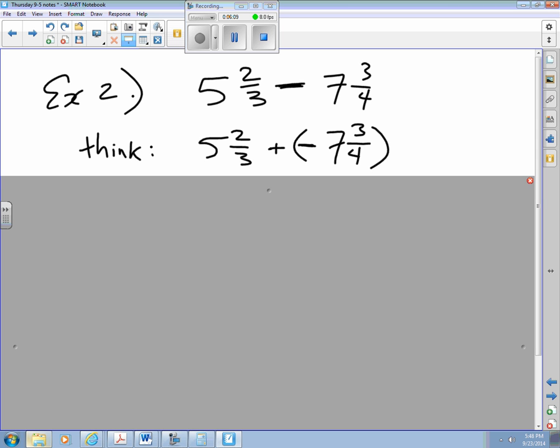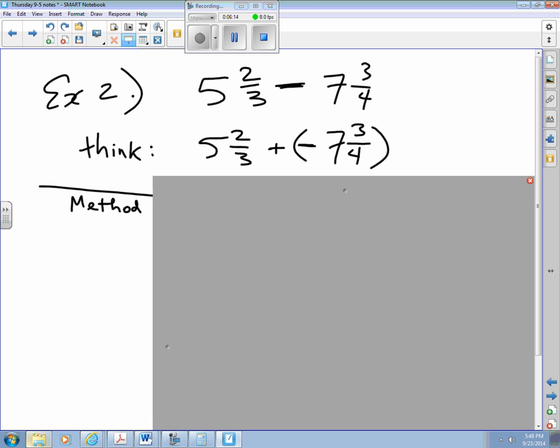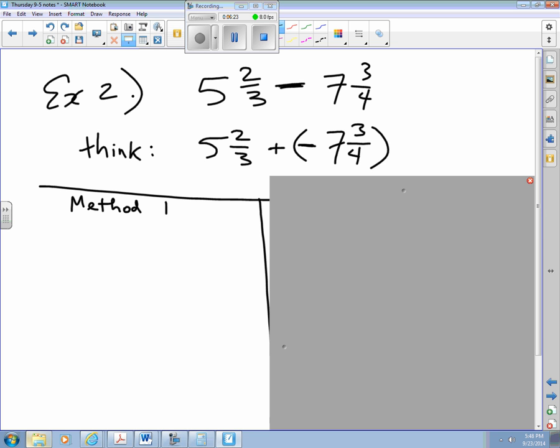Now from there, let's do this in two methods again. You can split your page in half maybe and we'll do them on two sides. Method number 1 is to change to an improper fraction. So I have 5 times 3 plus 2, which is 17 thirds, and then I have 7 times 4 plus 3, which is 31 quarters, and I'm adding a negative. Sorry that my smart board's a bit off, let me see if I can fix that. 17 thirds plus the negative of, again, 31 quarters.